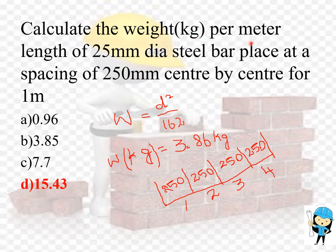Calculate the weight in kilogram per meter length of 25mm diameter steel bar placed at a spacing of 250mm center by center for 1 meter. We know the formula to calculate the weight of steel bar, that is w equals d squared divided by 162. Here diameter is 25mm, so 25 into 25 divided by 162, we get the weight as 3.86 kilogram.